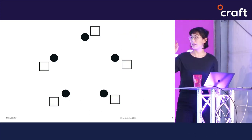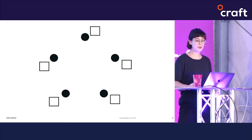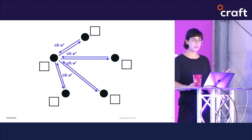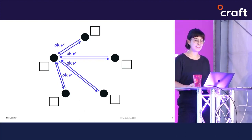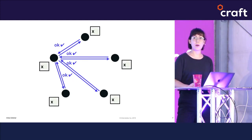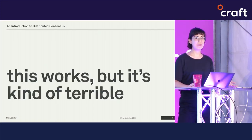We want this system to come to consensus on some value. Naively, we could have one node propose some value X to every other node in the system, and once all those other nodes say okay, the proposer node can adopt X as its value, and then all the other nodes can adopt X as well. This will work, but we have a couple of problems.